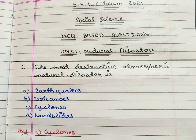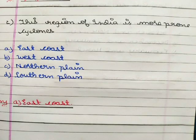First question: the most destructive atmospheric natural disaster is option A earthquakes, option B volcanoes, option C cyclones, option D landslides. The correct answer is option C cyclones.